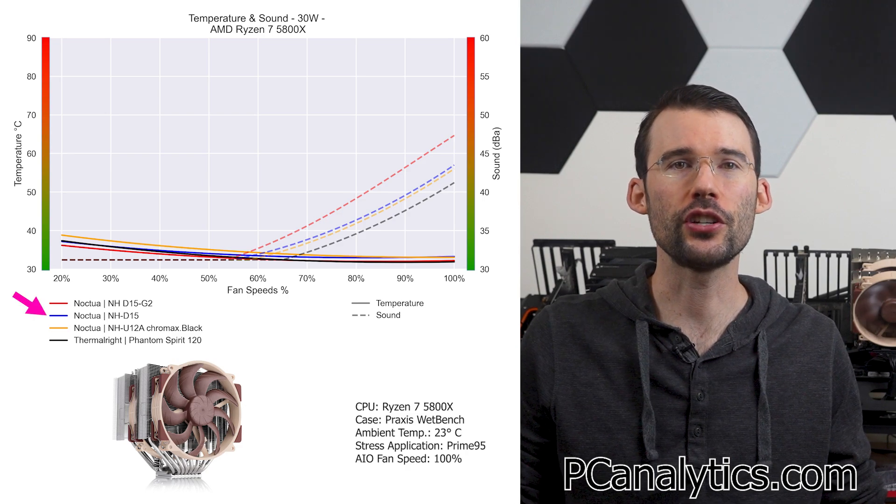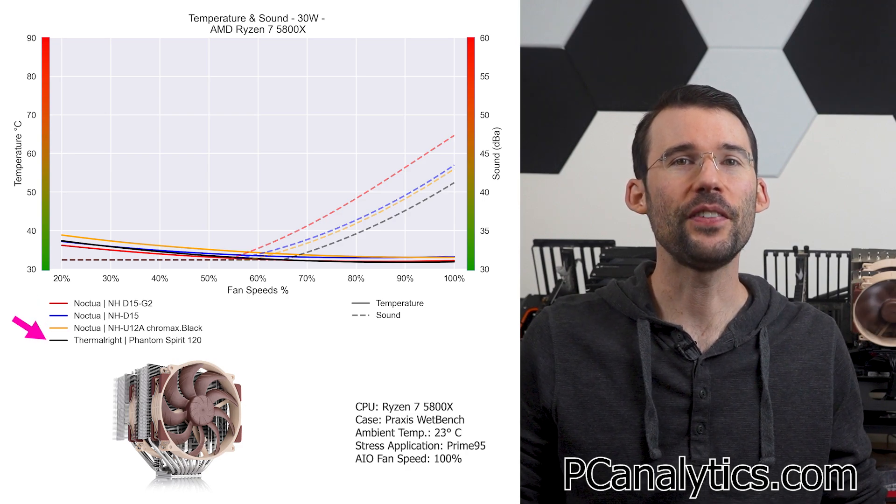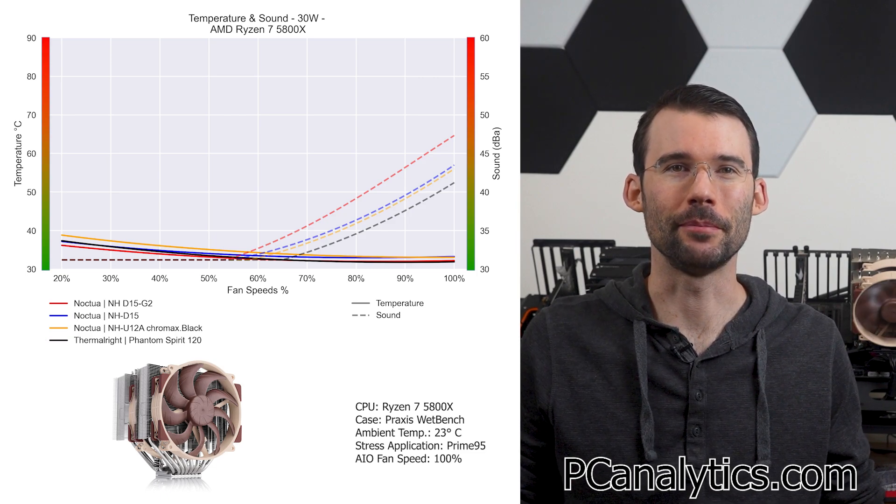Next up, we will compare the Noctua NH-D15G2 to a few other coolers in its weight class, including the first generation Noctua NH-D15, Noctua U12A, and the Phantom Spirit 120. More comparisons can be found on my website at PCAnalytics.com.